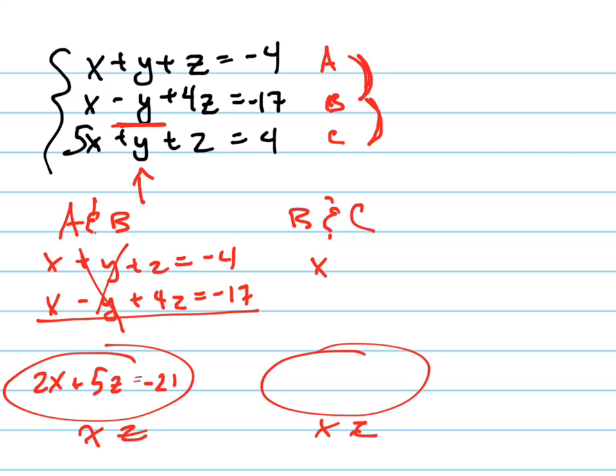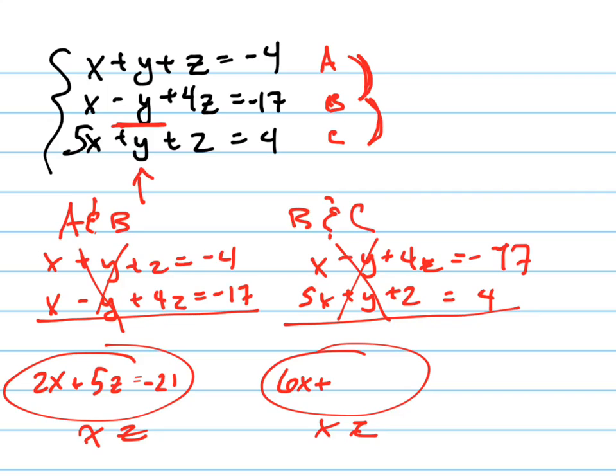And then B and C, if I put those together, 5X plus Y plus Z equals 4. Again, sometimes I have to multiply one or the other by a constant, but in this case I don't have to. That's why I chose to eliminate the Y. So I get 6X plus 5Z equals negative 13.